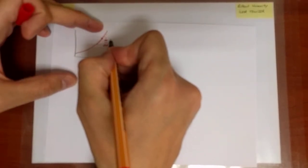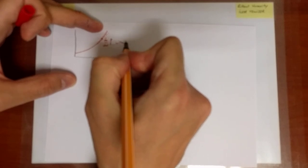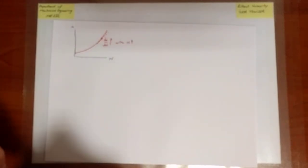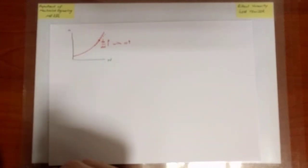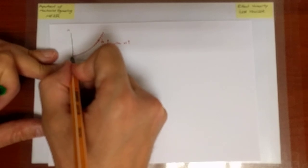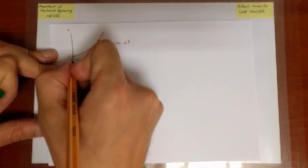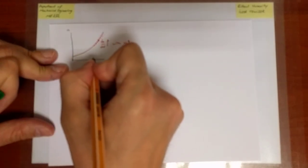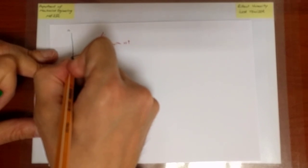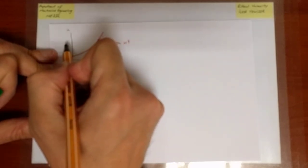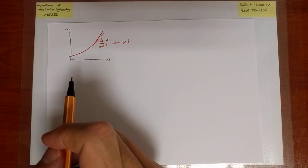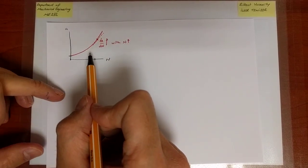dA/dN is the crack growth rate and we know that it increases with increasing number of cycles. If I have this line, I don't need any model — I can simply cycle the material through so many cycles, read off the initial crack size, and find what the new size of the crack is. But eventually, what I would like to do is make that prediction based on a model.